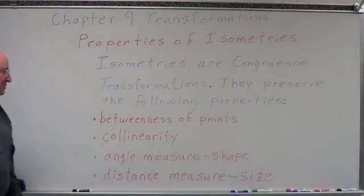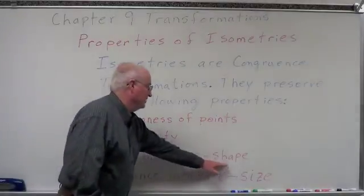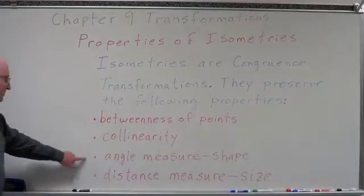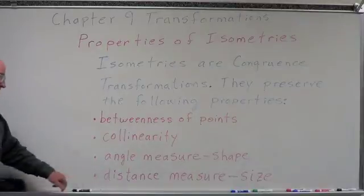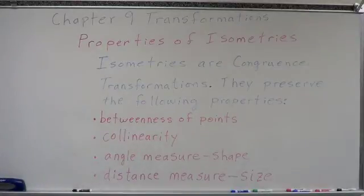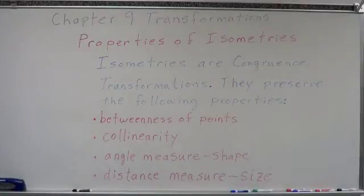Isometries also preserve angle measurement, which determines the shape of a figure, ensuring the angle measurements stay the same. They also preserve distance measure, which is the size. So between angle measure and distance measure, isometries maintain the shape and size of the original pre-image. The betweenness of points and collinearity mean there's not going to be any switching around or twisting of that figure within itself.